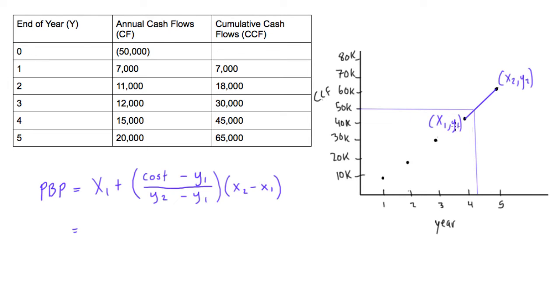So then what we can simply do is we'll just notice that x1 is going to be 4, 4 years, and then x2 will be 5 years, y1 will be the corresponding cumulative cash flow, so we'll have y1 is 45,000, and y2 is 65,000. So we can just go ahead and fill this in now.